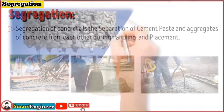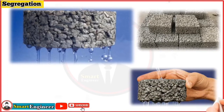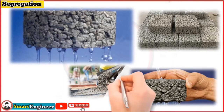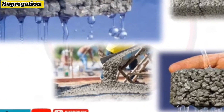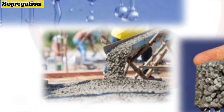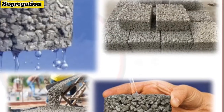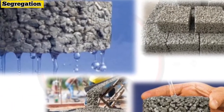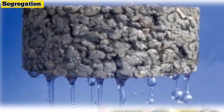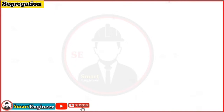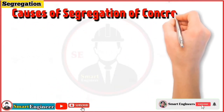Segregation of concrete affects strength and durability in structures. In good concrete, all aggregates are evenly coated with sand and cement paste and form a homogeneous mass. During handling, transporting, and placing, due to jerks and vibrations, the paste of cement and sand gets separated from the coarse aggregate. If concrete segregates during transit, it should be remixed preferably before depositing. However, concrete where initial setting time has passed should not be used.